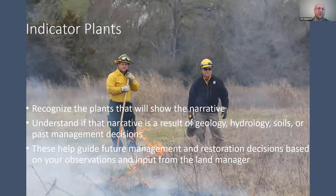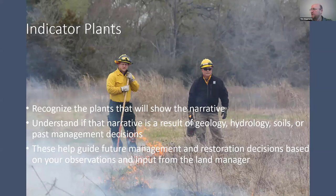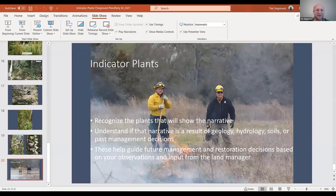What you're really looking for when identifying indicator plants is recognizing the plants that will show the narrative they're trying to tell you for your local area. Are you looking at grasses telling you about grazing? Plants telling you about hydrology? Understand what they're saying about geology, hydrology, soils, or past management decisions — continuous overgrazing, absence of fire, shrub invasion — and use those observations to help guide future management and restoration decisions based on input from the land manager.